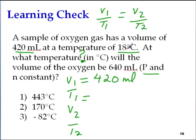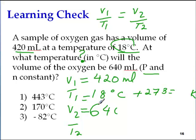What is my V1? My V1 is 420 mL. What is my T1? My T1 is 18 degrees Celsius. We have to add 273 to it to convert it into Kelvin. What are we going to find for V2? V2 we already have shown as 640 mL. What we have to find is T2. If I add this up I am going to get 291.